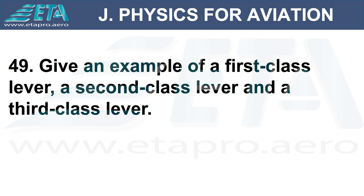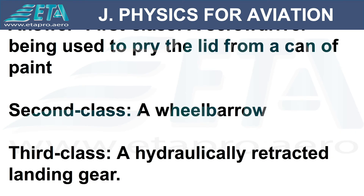Give an example of a first-class lever, a second-class lever, and a third-class lever. Answer: first-class lever — a screwdriver being used to pry the lid from a can of paint. Second-class lever — a wheelbarrow. Third-class lever — a hydraulically retracted landing gear.